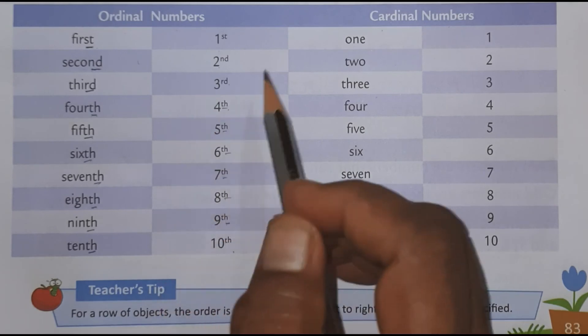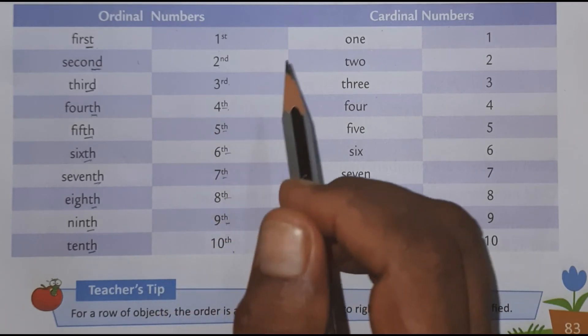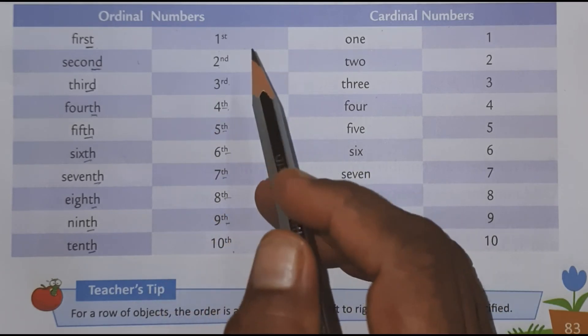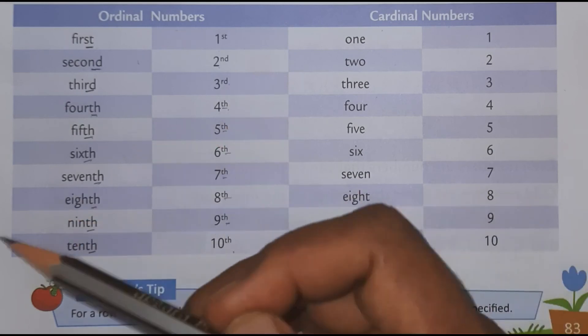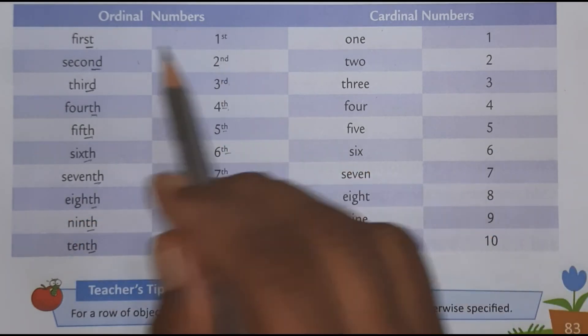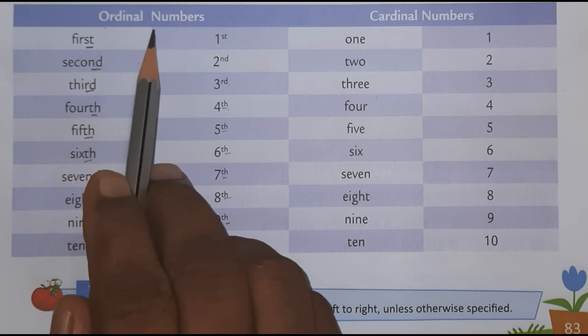Ordinal in any competition. So whenever there is a competition we say first, second, third like that. Those numbers are known as ordinal numbers.